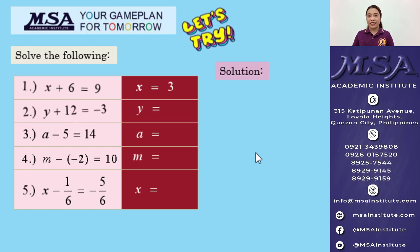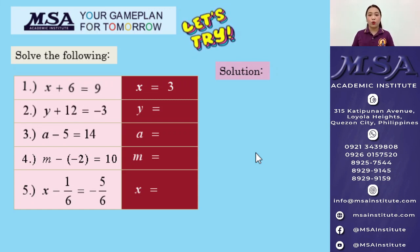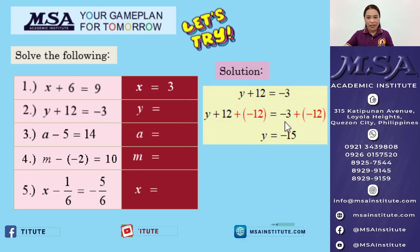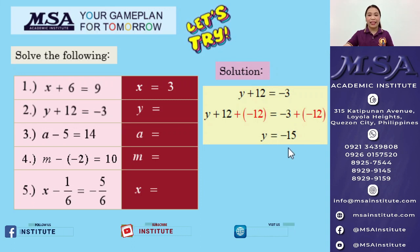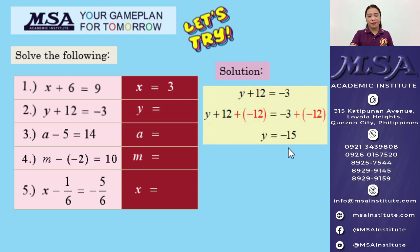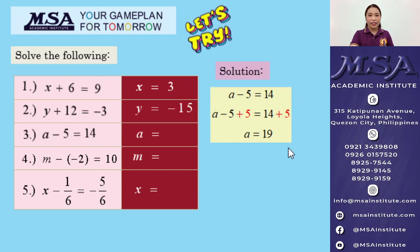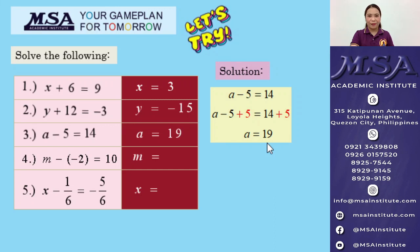For the second item: Y plus 12 is equal to negative 3. Add negative 12 on both sides and simplify. Negative 3 plus negative 12 gives us negative 15. So, the answer for number 2 is negative 15. For the third item: A minus 5 is equal to 14. Add positive 5 on both sides and simplify. 14 plus 5 gives us 19. So, A is equal to 19.